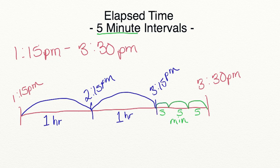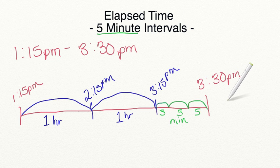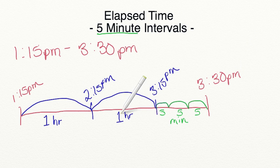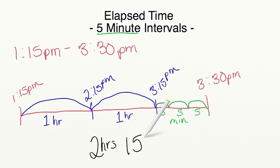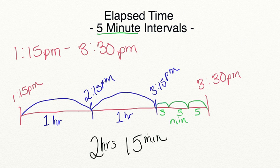My last step is to add up all of my hours and all of my minutes together — that will give me the elapsed time between 1:15 PM and 3:30 PM. I have one hour plus one hour, which equals two hours. And I have 5, 10, 15 minutes. So the elapsed time is two hours and 15 minutes from 1:15 PM to 3:30 PM.